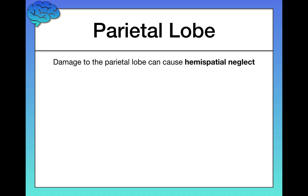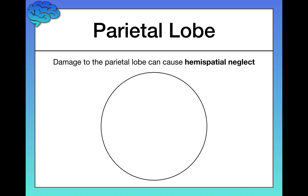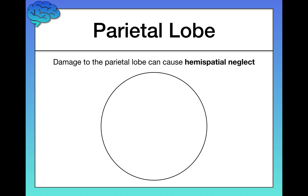Hemispatial neglect means neglecting one half of your visual field — either right or left. It's not that your eyes are damaged, but you just can't attend to that half of your visual field. We can test this by drawing a blank clock face for the patient and asking them to write in the numbers. Most people do this easily, but someone with hemispatial neglect will often cram all the numbers onto one side of the clock, unable to focus on the other half of what they're seeing.